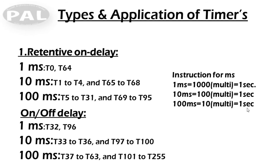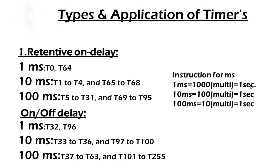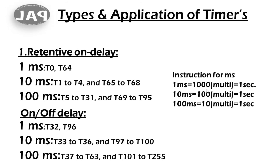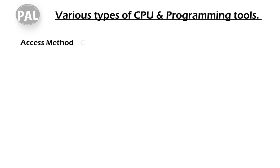For example, with a 100 millisecond timer: 10 gives 1 second, so 5 gives 50 milliseconds. For a 1 millisecond timer like T32, if you want 5 seconds, set the timer value (PT) to 5000 — because 1 second equals 1000 counts. I hope you understand: for 1 millisecond timers, multiply by 1000 to get the desired time in seconds.